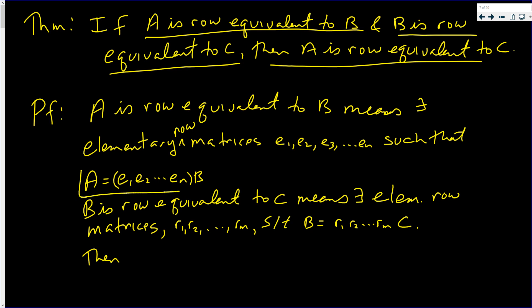Then A is equal to E1, E2 up to En times B, which is E1, E2 up to En times any other way of writing B, which is this way: R1, R2 up to Rm times C.